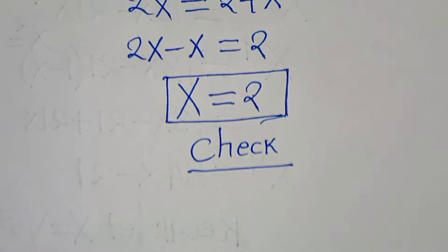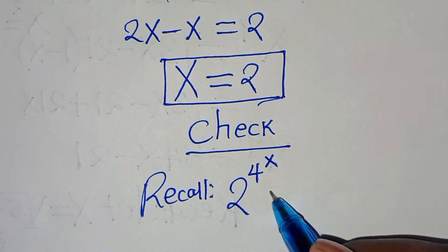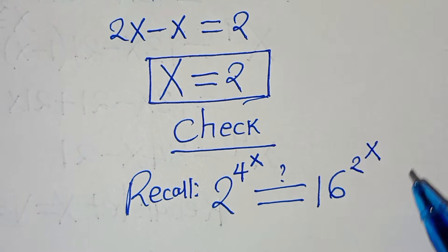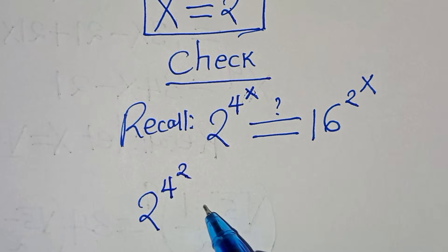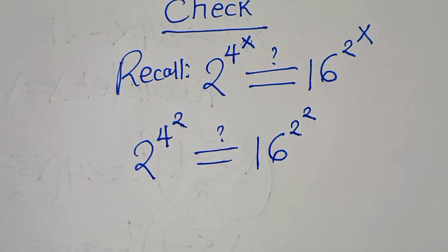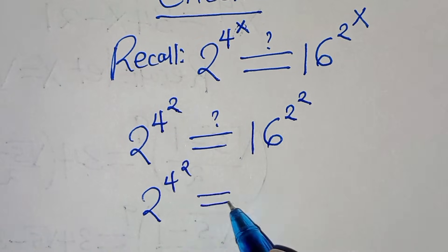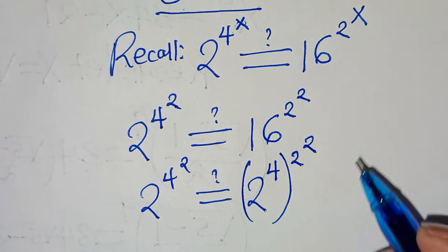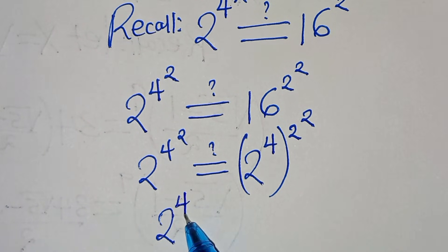The next step is to verify — let's check if this value of x satisfies the equation. Recall we have 2 to the power of 4 raised to the power of x, equal to 16 to the power of 2 to the power of x. Substituting x equals 2, we get 2 to the power of 4 to the power of 2, which should equal 16 to the power of 2 to the power of 2. We can express 16 as 2 to the power of 4, so the right-hand side becomes 2 to the power of 4, raised to the power of 2, then raised to the power of 2.